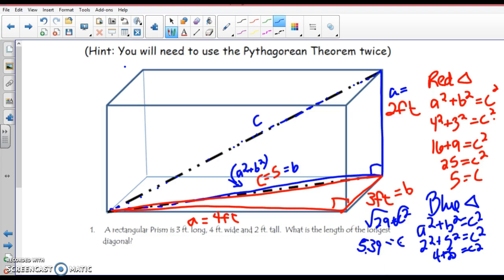So it is approximately 5.39 feet. That would be the longest possible length of a line that I could put in that box. Right? Now, what I would like you to do...